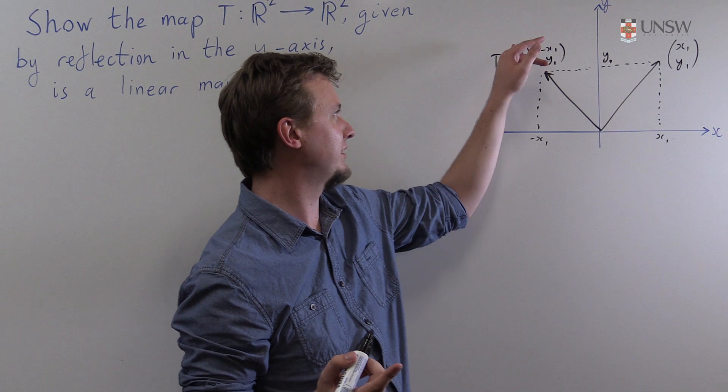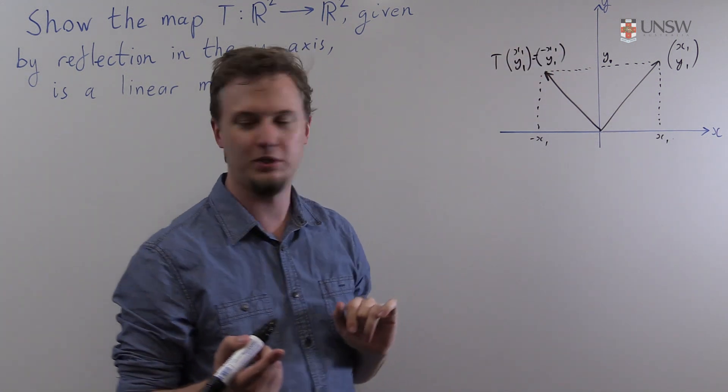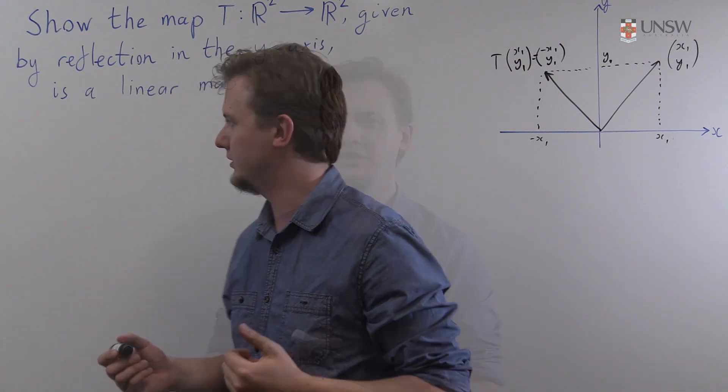All right so now we have a formula for this map. We have the map that takes the vector (x₁, y₁) to the vector (-x₁, y₁). All right so now we can try and show linearity.